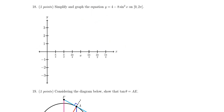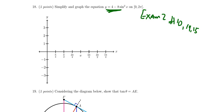Question number eighteen will ask you to graph a trigonometric function, from exam two material. On exam two, questions ten, fourteen, and fifteen required graphing trigonometric functions — sine, cosine, tangent, secant, cotangent, or cosecant; be prepared to graph any of those. This version, drawn from question fifteen on exam two, actually requires you to apply trigonometric identities first. For example, we don't directly know how to graph sine squared, but using the right identity, we can convert it into something easier to graph.